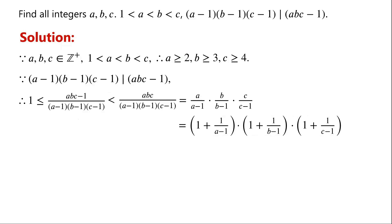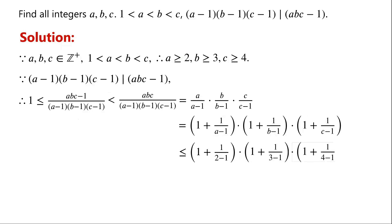As a ≥ 2, so (1 + 1/(a-1)) ≤ (1 + 1/(2-1)). As b ≥ 3, so (1 + 1/(b-1)) ≤ (1 + 1/(3-1)). As c ≥ 4, so (1 + 1/(c-1)) ≤ (1 + 1/(4-1)). This product equals 2 × (3/2) × (4/3), which is 4.